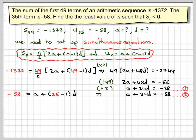So we'll solve them by doing 1 take away 2. A take away A is nothing. 24D minus 34D gives me minus 10D. And minus 28 minus minus 58, so be careful here, is equal to 30.